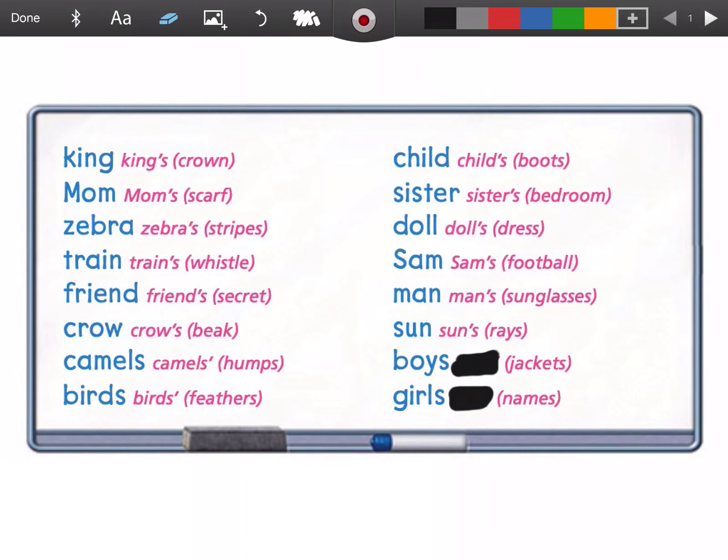Okay, the boys have jackets. So there's more than one boy, and they have jackets. More than one, and they have jackets. So it would look like this. Did you guess that the apostrophe would come at the very end? If you did, you're starting to get it. Good job.